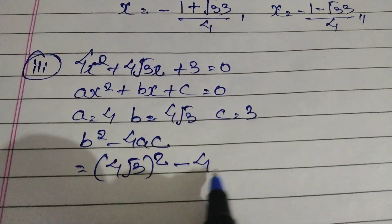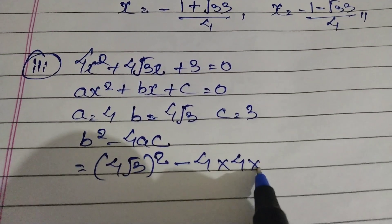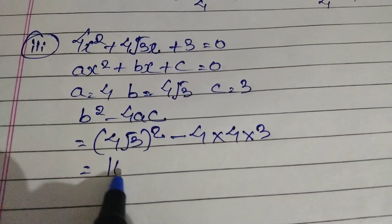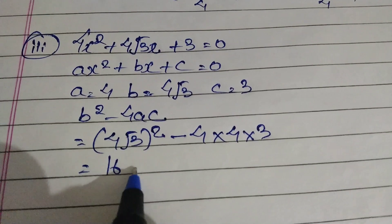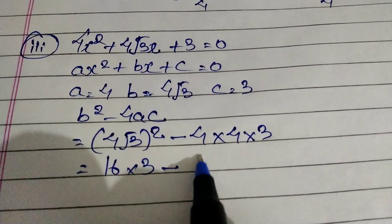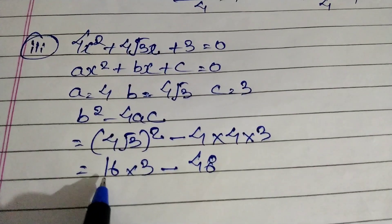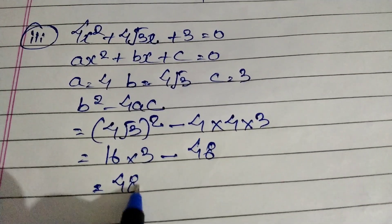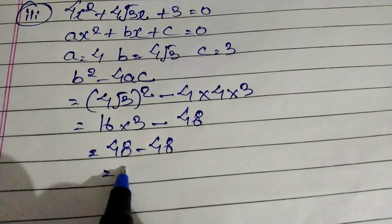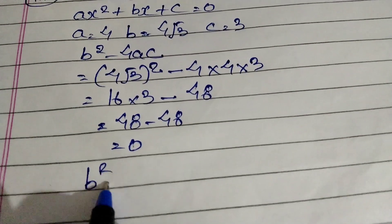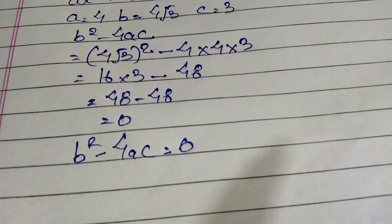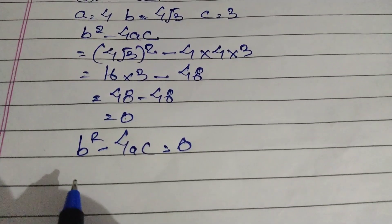So (4√3)² minus 4 into a (which is 4) into c (which is 3). 4 into 4 is 16, and (√3)² gives 3, so 16 times 3 is 48. Then 4 into 4 is 16, into 3 is 48. So 48 minus 48 equals 0. Since b² minus 4ac equals 0, equal roots are possible.